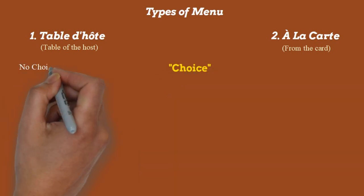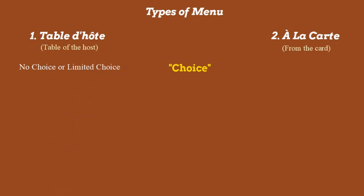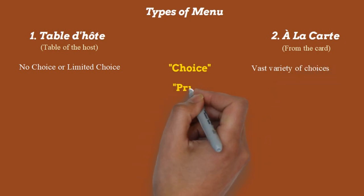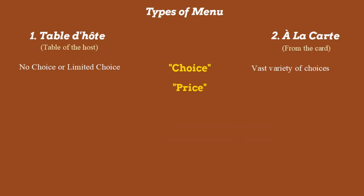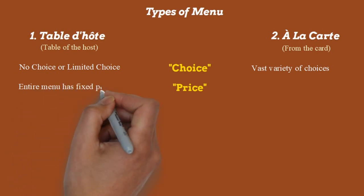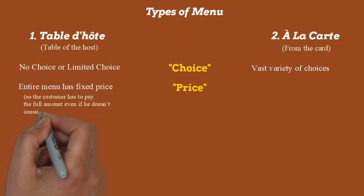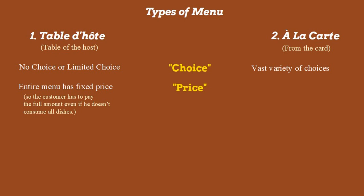If we want to differentiate the table d'hôte and the à la carte menu, we can do so on various parameters. The first is choice: in the table d'hôte menu there is either no choice or very limited choice, whereas the à la carte menu offers a vast variety of choices. The second parameter is price: in the table d'hôte the entire menu is collectively priced at a fixed rate.